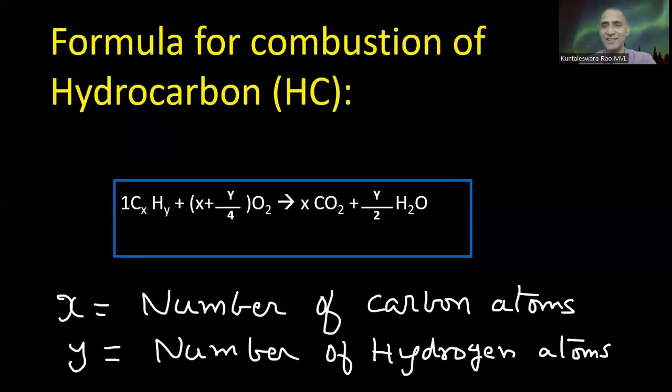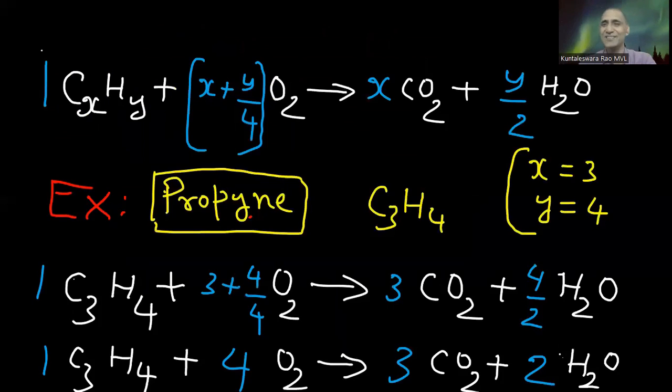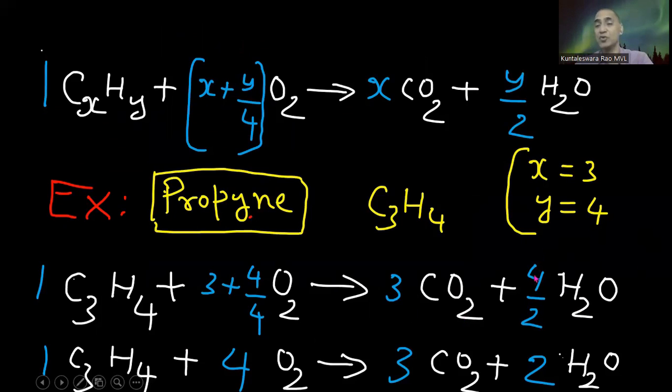I will give in detail. This is the hydrocarbon formula. Propane, C3H8. The same 3 is repeated in the place of carbon dioxide. But before water, what is the number you have written? Y by 2. Here C3H8, 3 is repeated in the place of carbon dioxide. Y by 2, that's 8 by 2, equals 4.